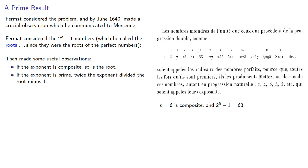Next, if the exponent is prime, then twice the exponent divides the root minus 1. For example, n = 7 is prime, and the corresponding root, 2^7 - 1 = 127 minus 1 = 126, is divisible by 2 times 7 = 14.